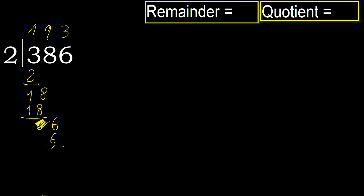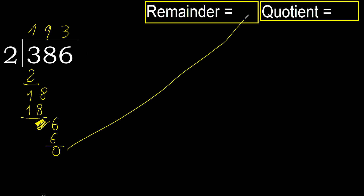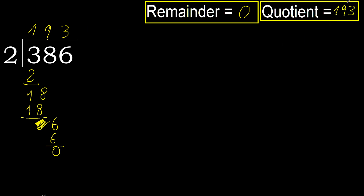The remainder is 0 — there are no more digits, so we are finished. 386 divided by 2 is 193.